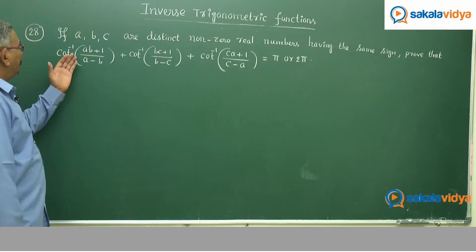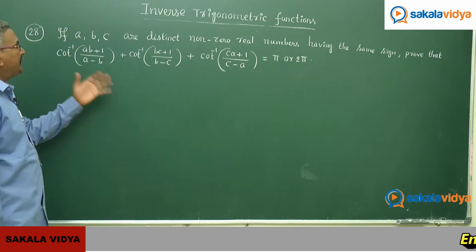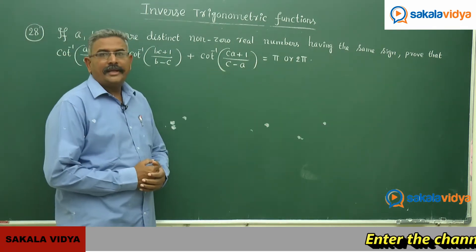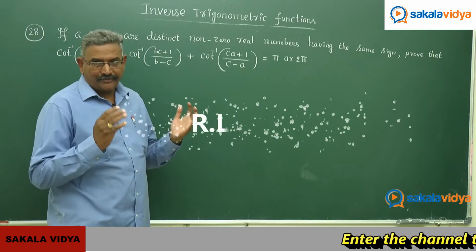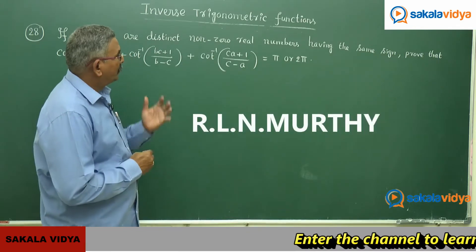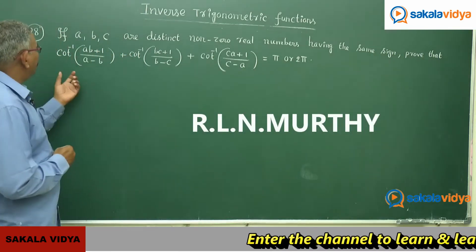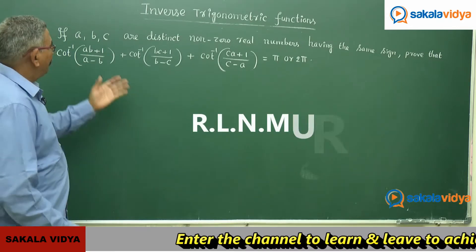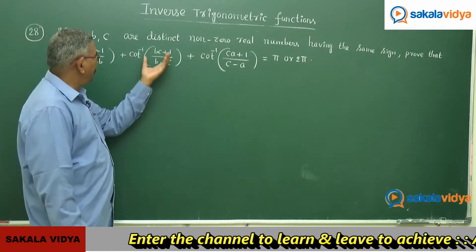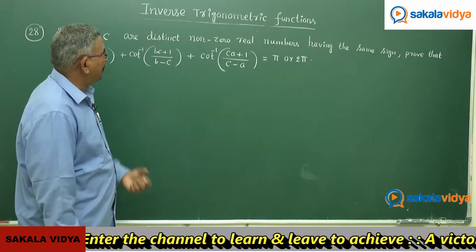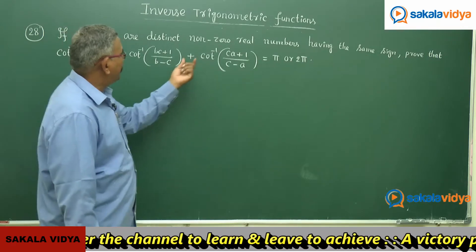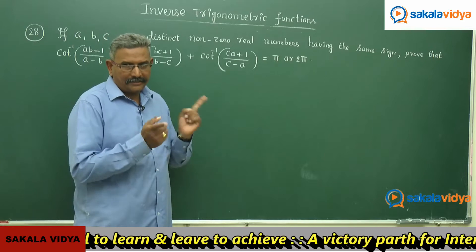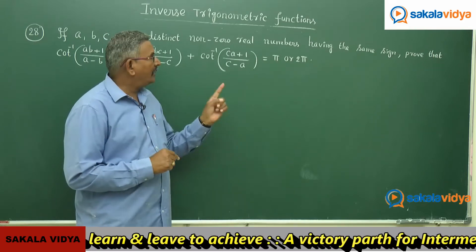If A, B, C are distinct non-zero real numbers having the same sign, prove that cot inverse of (AB + 1)/(A − B) plus cot inverse of (BC + 1)/(B − C) plus cot inverse of (CA + 1)/(C − A) equals either π or 2π.